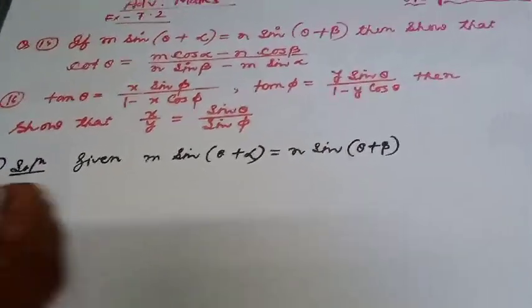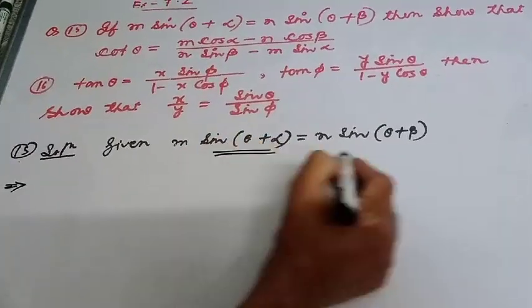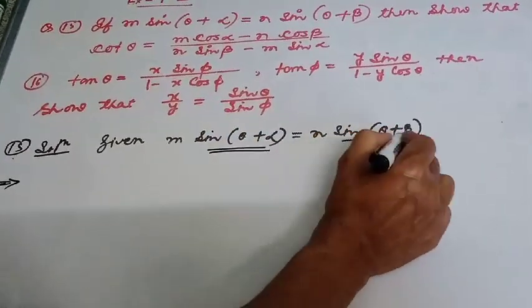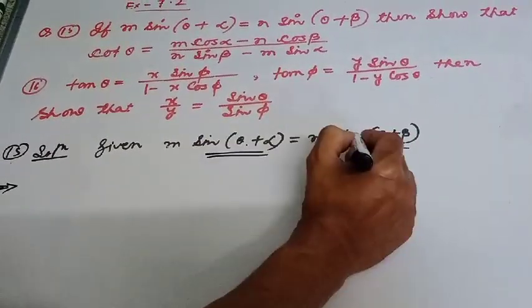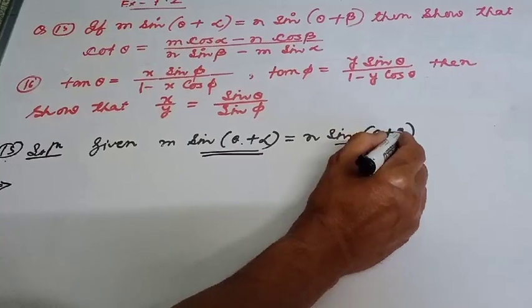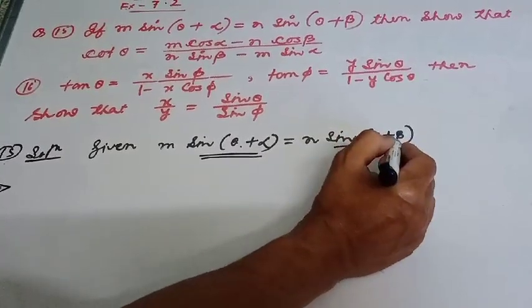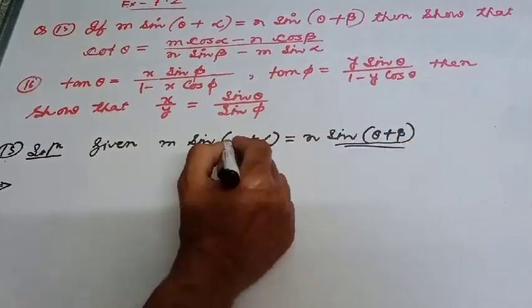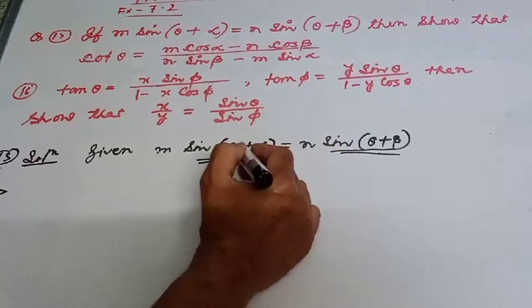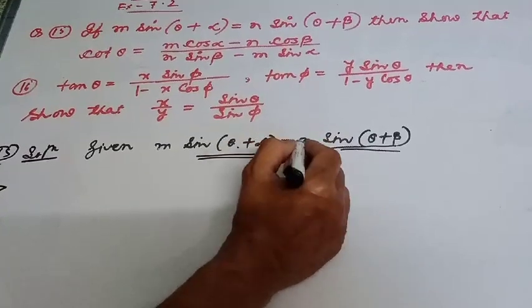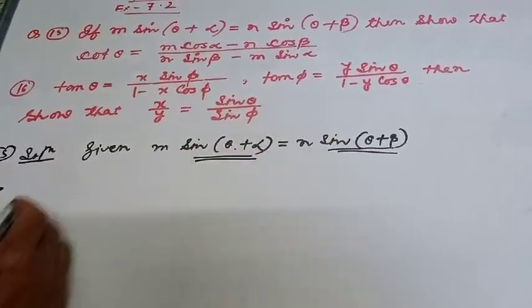We will use the formula sin(A + B). We will expand both sides using the formula: sin(A + B) = sin A·cos B + cos A·sin B.